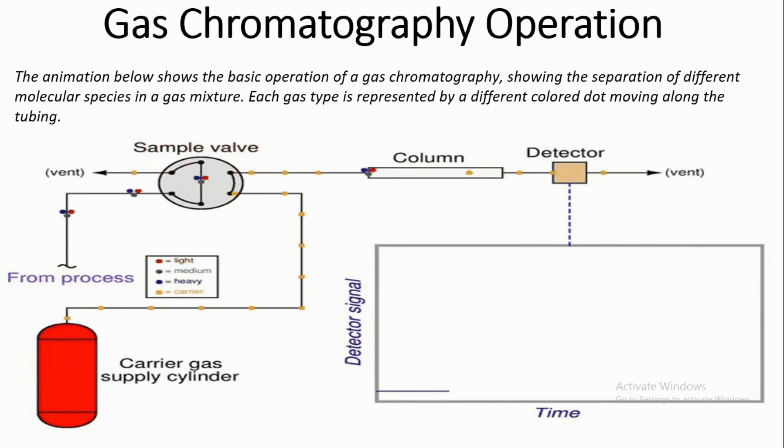Carrier gas is represented by orange dots moving constantly through the sample wall and column. Process sample is represented by cluster of three dots: red light, green medium, and blue heavy molecules mixed together.